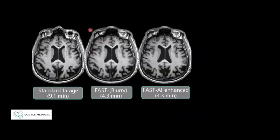Here's what it looks like. Here's a standard image acquired in nine minutes. If you change your protocol and accelerate, you can get that down to half the time, but your image becomes very noisy. Then you restore the signal-to-noise ratio and other aspects by using deep learning reconstruction applied to this fast image — and this is what you get. Look at the difference in gray-white differentiation compared to the standard image.